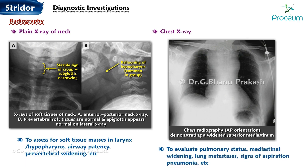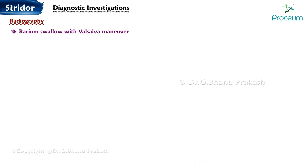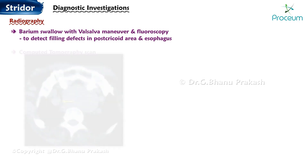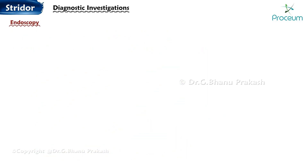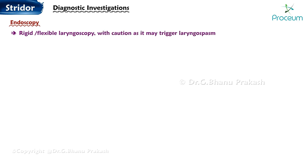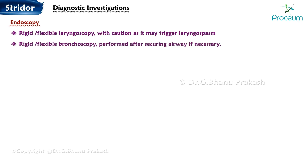Diagnostic investigations for Strider include: barium swallow with Valsalva maneuver and fluoroscopy to detect filling defects in the post-cricoid area and esophagus; CT scan or MRI of the neck and mediastinum for detailed imaging; endoscopy — rigid or flexible laryngoscopy, with caution as it may trigger laryngospasm; and rigid or flexible bronchoscopy, performed after securing the airway if necessary, to assess lower airway involvement.